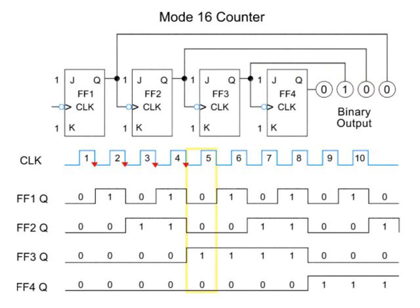These toggling patterns, triggered on the negative edge of the clock pulse, continue, with pulse 5 giving an output of 0101.